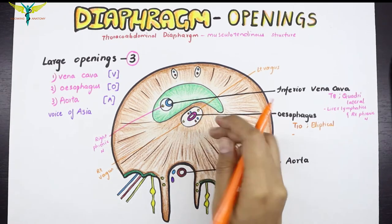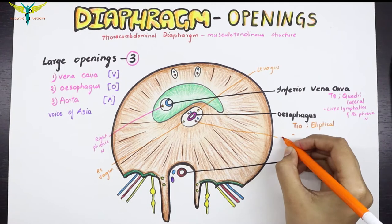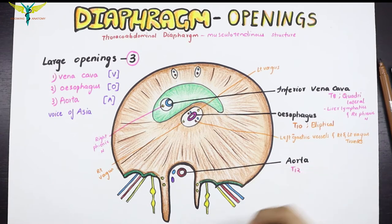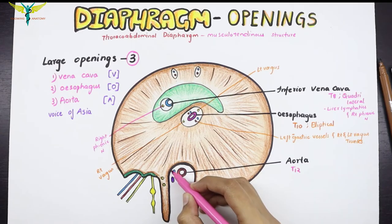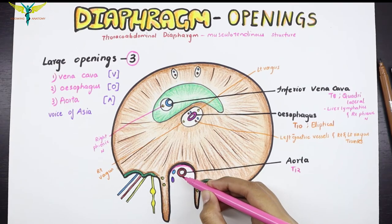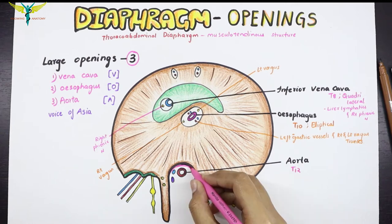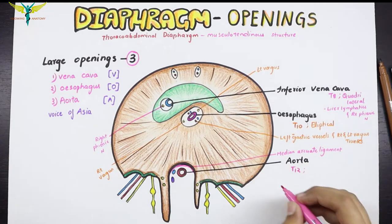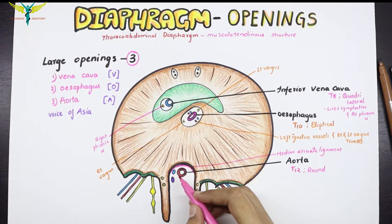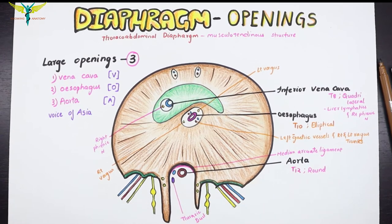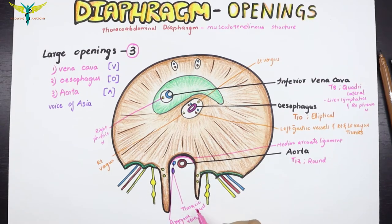The left gastric vessels also accompany the esophagus through the esophageal opening. The third large opening is the aortic opening, which opens at the T12 vertebral level behind the median arcuate ligament. This opening is round in shape and the structures that accompany the aorta through the aortic opening are the thoracic duct and the azygos vein.